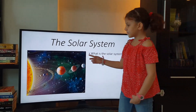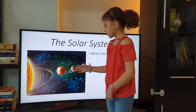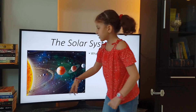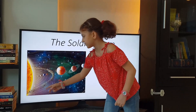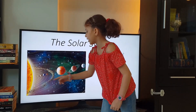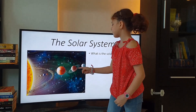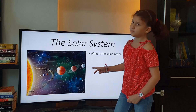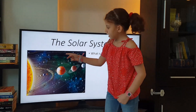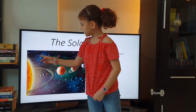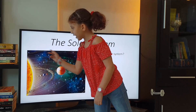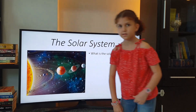The solar system consists of the Sun, Mercury, Venus, Earth, Mars, Jupiter, Saturn, Uranus, and Neptune. It also consists of the asteroid belt and the Kuiper belt.